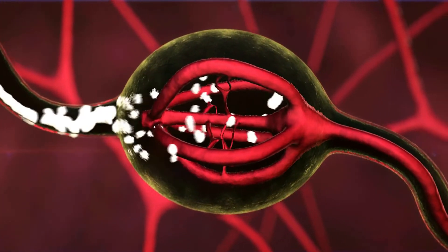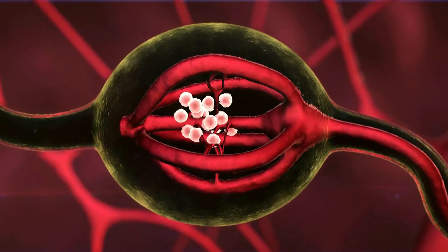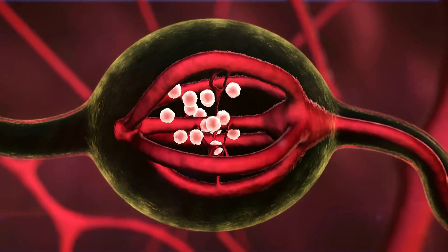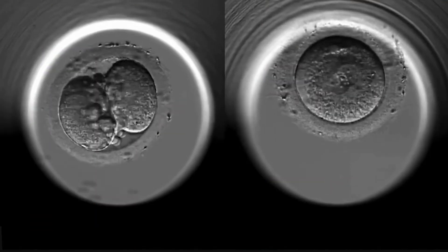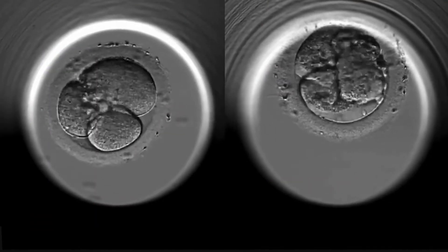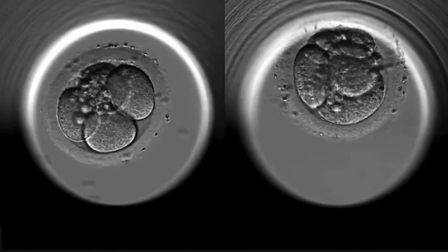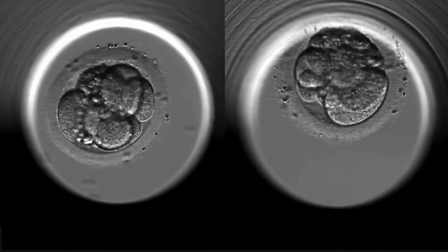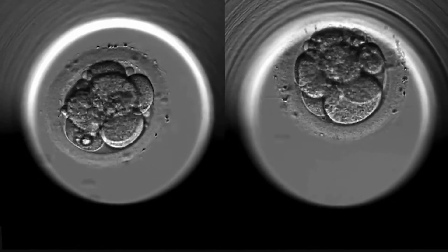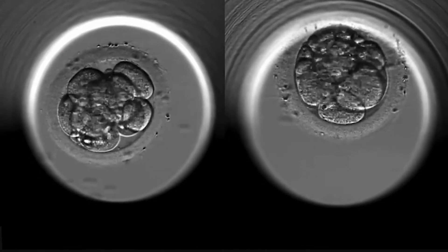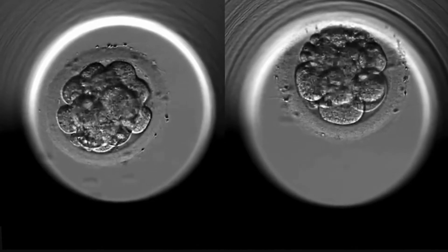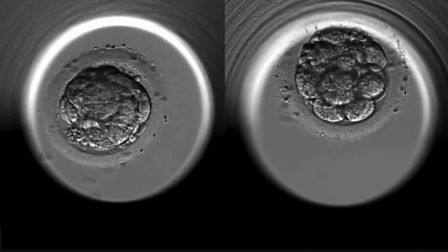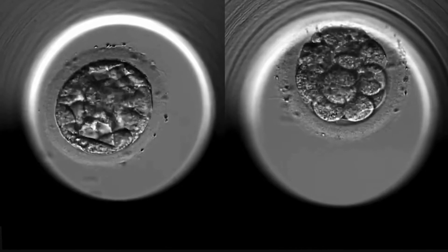If a sperm is successful on its quest to fertilize an egg, the now-fertilized egg, called a zygote, continues to move down your fallopian tube, dividing into two cells, then four cells, then more cells. About a week after the sperm has fertilized the egg, the zygote has traveled to your uterus. It's now a growing cluster of about 100 cells, called a blastocyst.